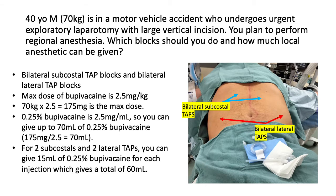Since you're doing four injections — two subcostals and two lateral TAPs — you can give 15 milliliters of 0.25% bupivacaine for each injection, which gives you a total volume of 60 milliliters.